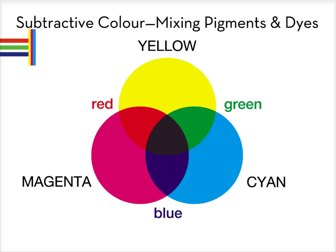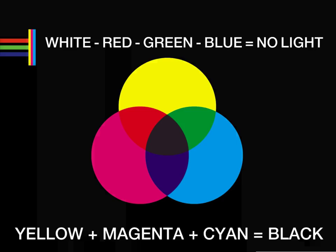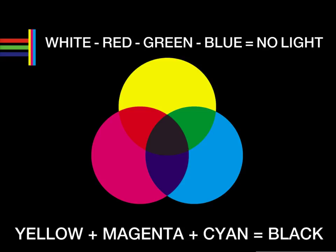When all three of the primary subtractive colors are in the mix, primary yellow absorbs — i.e., subtracts — the blue light, primary magenta subtracts the green light, and primary cyan subtracts the red light. With all the light absorbed, we see black. White light minus red light minus green light minus blue light is no light.